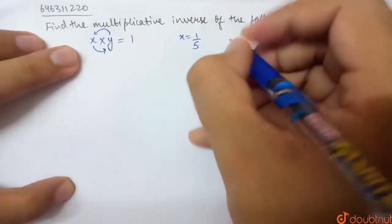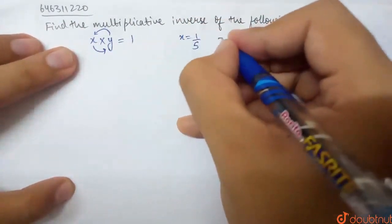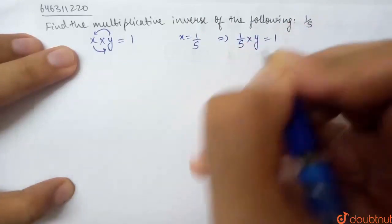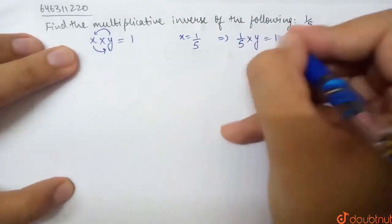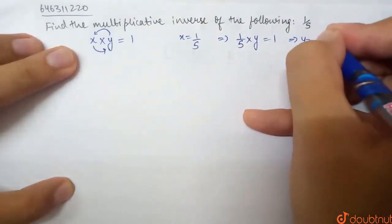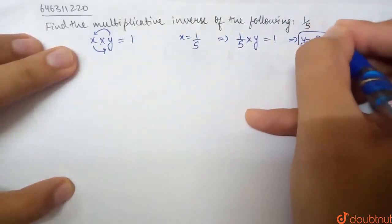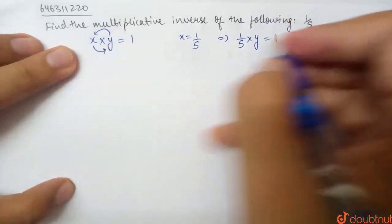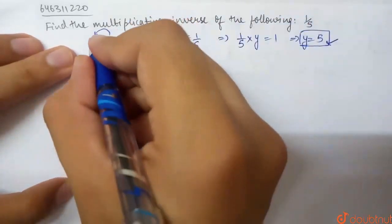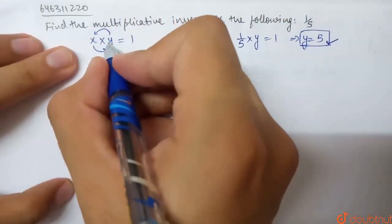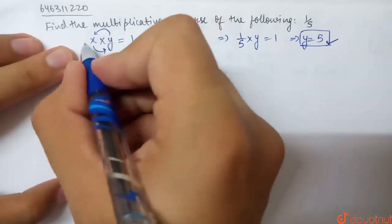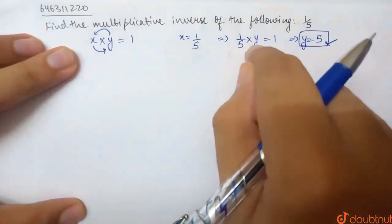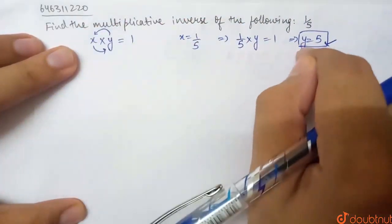So, I will find the multiplicative inverse. Basically, what I have to do is: 1 by 5 multiplied by a number y, such that the answer is 1. Rearranging, y equals 5. So x multiplied by y equals 1, and y is equal to 5.